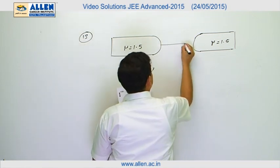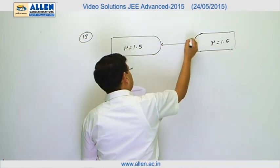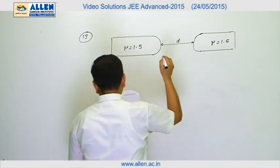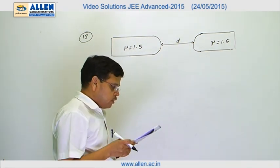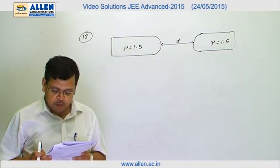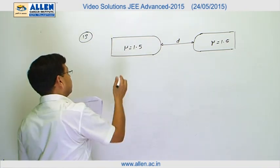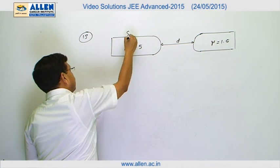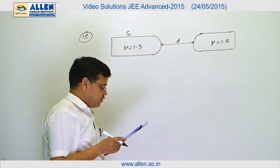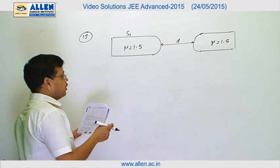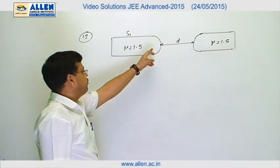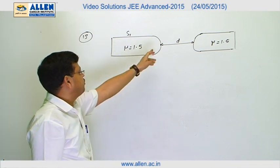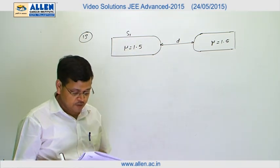The separation between these two rods is given out to be d and it is given that a point source of light is placed inside the rod S1 on its axis at a distance of 50 centimeter from the curved surface. That means, the point is located at a distance of 50 centimeter from this surface towards the rod, because it is inside the rod.